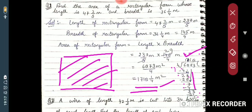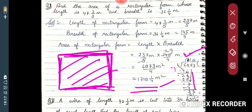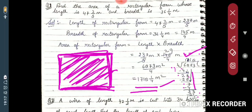As you know very well, area means the inner part of the rectangular field and perimeter means only the boundaries. Here you have to find the area, so you use length into breadth.